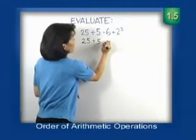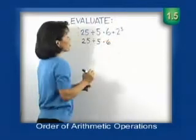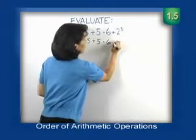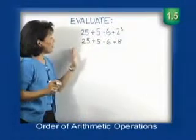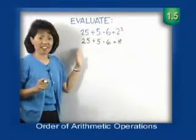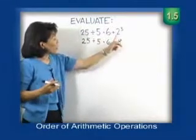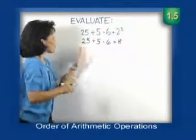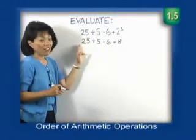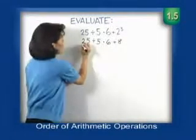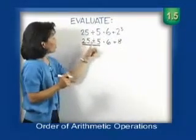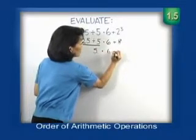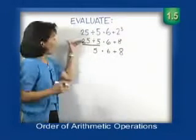So 25 divided by 5 — remember, the dot means times — 6 plus 2 to the third power means 2 times 2 times 2, or 8. Now each time we work a problem like this, we start from the left-hand side. We did our exponents, now we move on to multiplication or division, whichever we encounter working from left to right. I start on the far left and see 25 divided by 5, so I simplify that: 25 divided by 5 is 5. I keep rewriting the rest, only simplifying one operation per line.